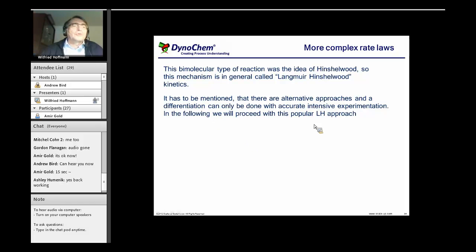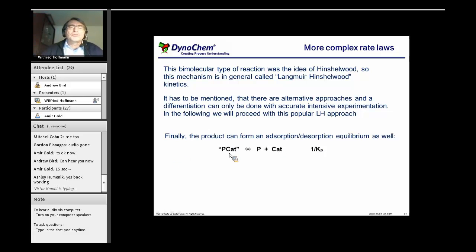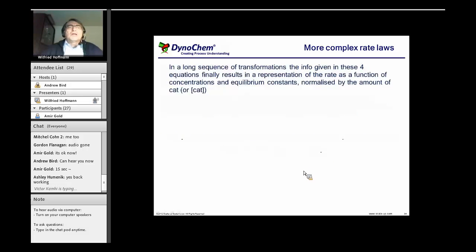Finally, the product can be adsorbed and we can get an adsorption equilibrium constant for the product, which is probably better represented this way because it's the other way around. So we can easily compare the Ka, K-hydrogen, and K-product.